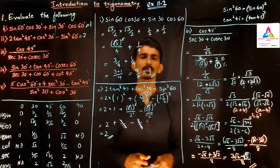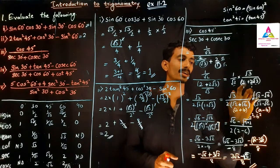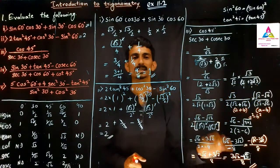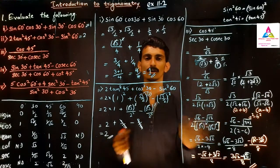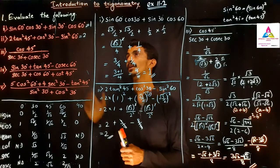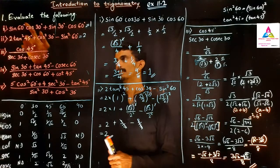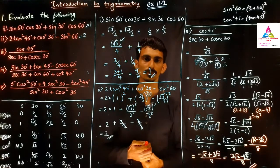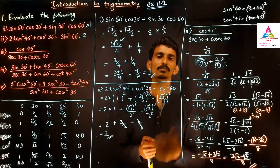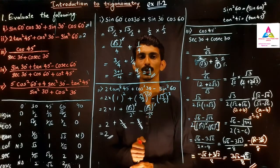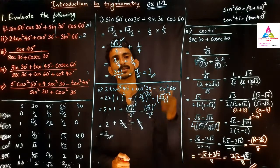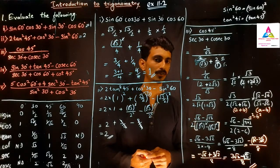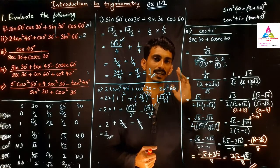These are the three answers for the first part of Exercise 11.2. The third question was lengthy because we had to rationalize the denominator. Questions 4 and 5 are in the next video. If you have any doubts, write in the comment section or contact me on Instagram or Facebook — links are in the description. Thank you for watching, see you in the next video. Take care.